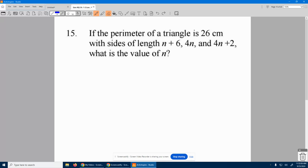Number 15. If the perimeter of a triangle is 26 centimeters with sides of length n plus 6, 4n, and 4n plus 2, what is the value of n?